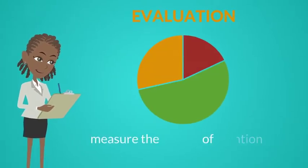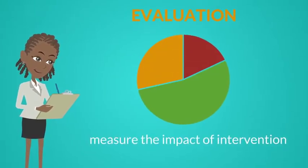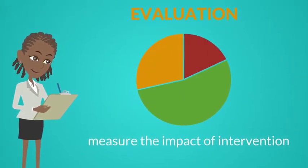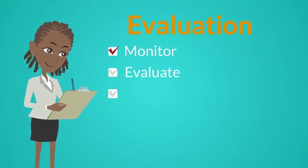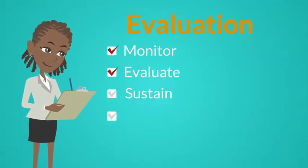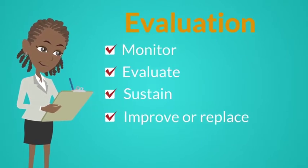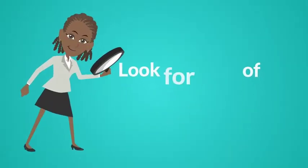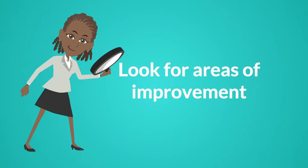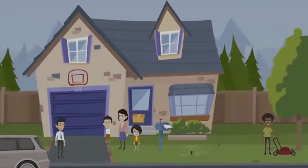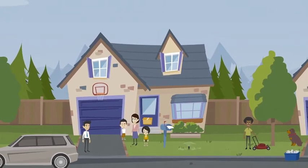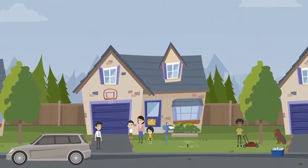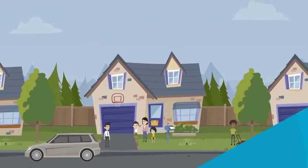In the Evaluation phase, we want to measure the impact of the intervention and its outcomes. In this phase, we monitor, evaluate, sustain, and improve or replace those things that aren't working. The purpose of evaluation is to look for areas of improvement. With respect to cultural competence, it is important to make sure that the community is involved in all aspects of the evaluation process.